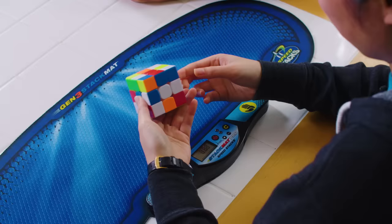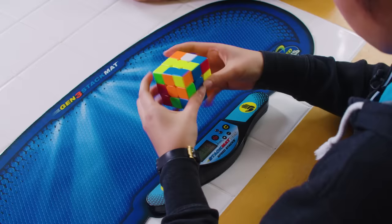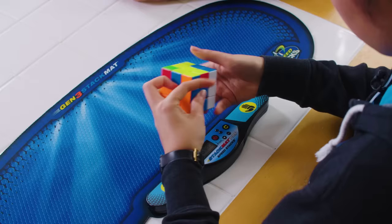And second, even if a human could look at a cube and quickly identify the fewest number of moves required to solve it, there's no telling whether performing that sequence of moves would be any faster than their usual technique. That's because there can be a trade-off between the number of moves it takes to solve a cube and the speed at which you can execute those moves.